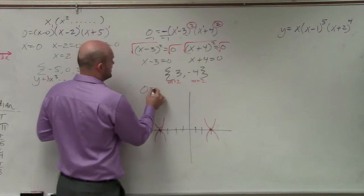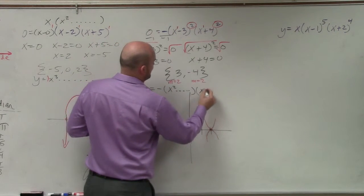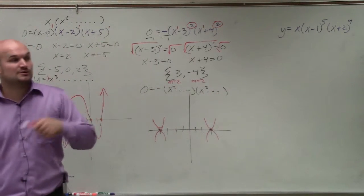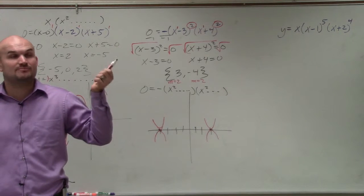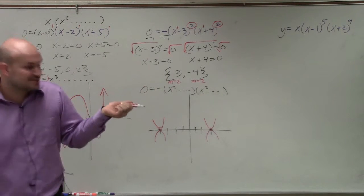So in reality, I have 0 equals negative x squared times x squared. And if you did an x squared times an x squared and multiplied everything out, the highest power would be 4, right? So your leading term would be x to the fourth.